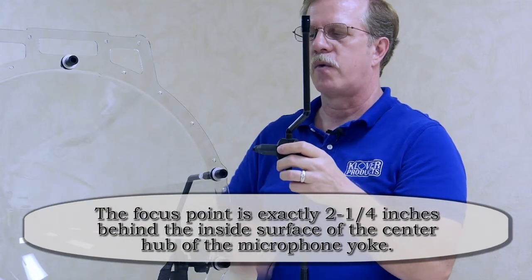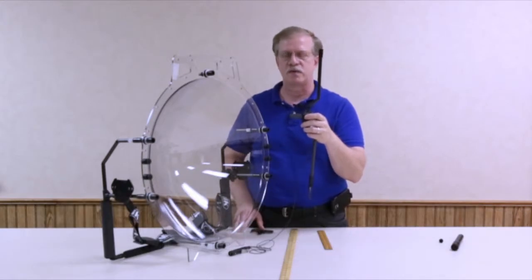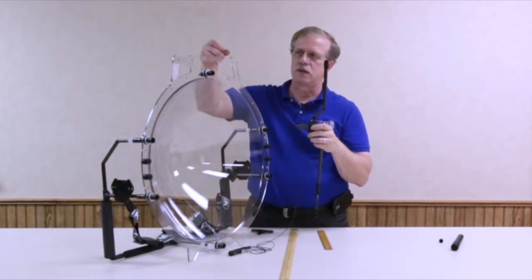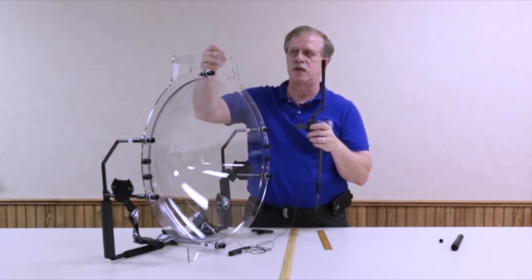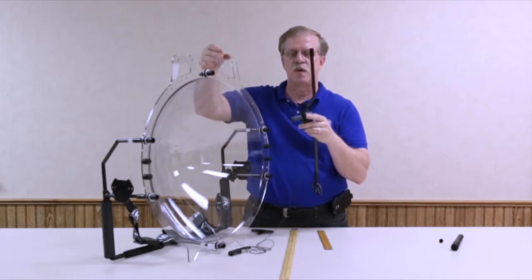Now we've incorporated some aids into the parabolic to help you with that focusing. The cutout at the top of the dish where you would normally install your wireless transmitter is two and a quarter inches wide.